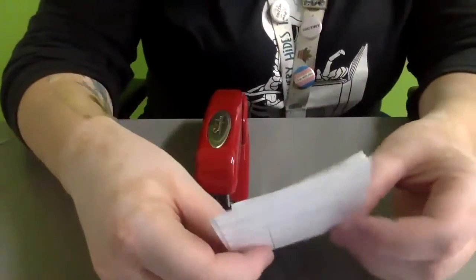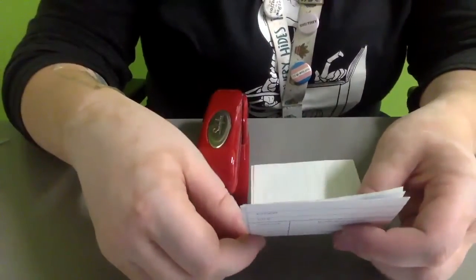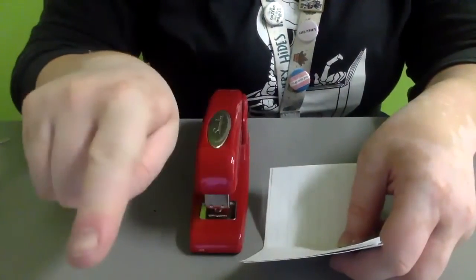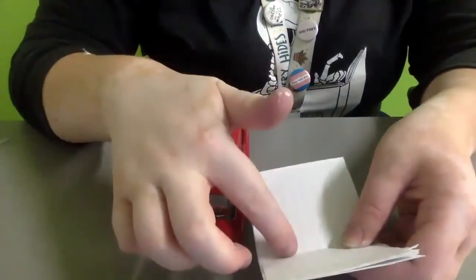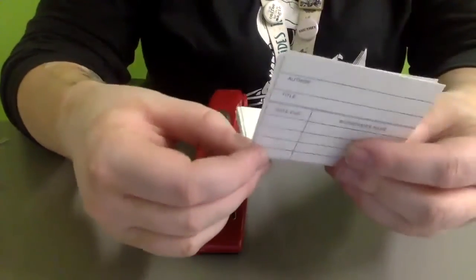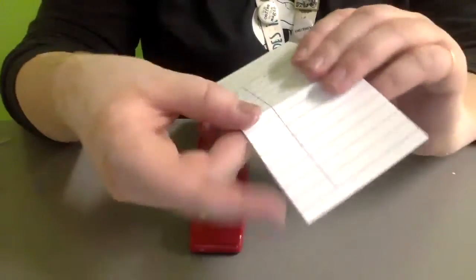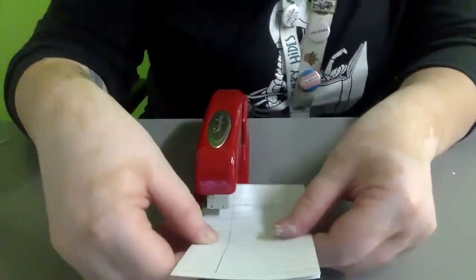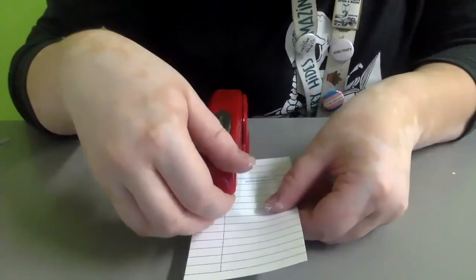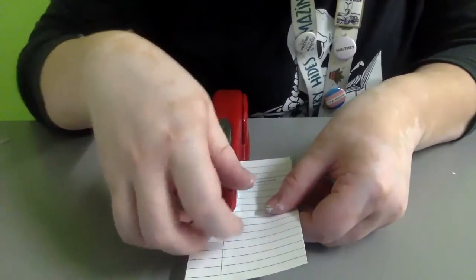And we're going to go ahead and line this up. Now there's two different ways you can staple this. You can either have the long side of the staple inside or outside your journal. We're going to go ahead and have ours on the outside, so you're going to want to hold this upside down. And we're going to line it up as evenly as we can with that crease.